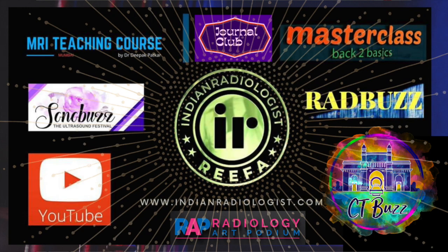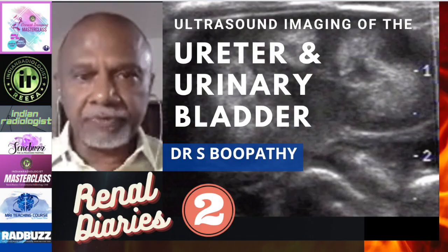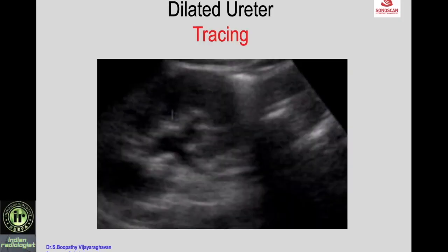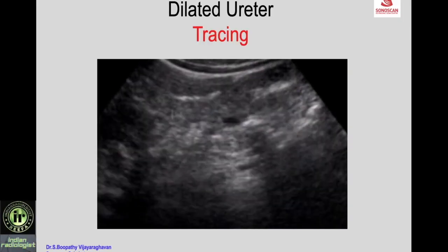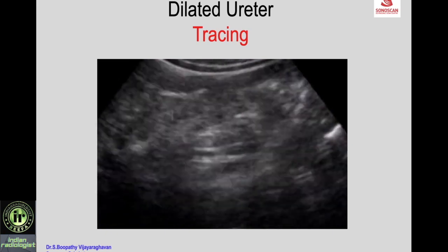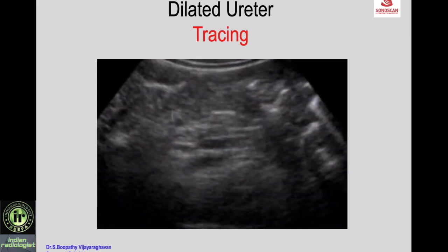Sonography of the urinary tract: technique, normal appearance and variations, part 2, covering the ureter and urinary bladder. In part 1, I covered the kidney and the renal pelvis. Now, the ureter, when it is dilated, can be traced to the level and cause of obstruction.